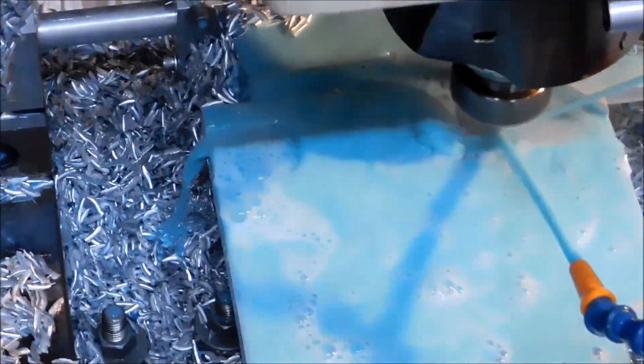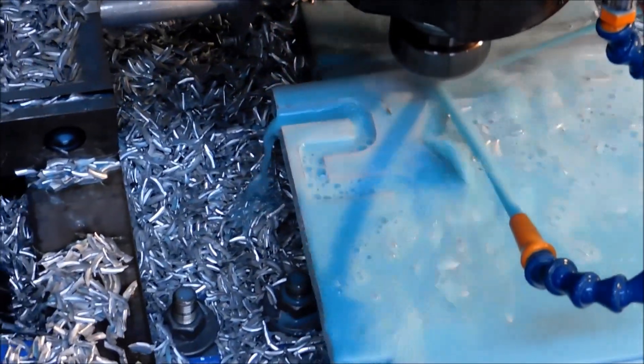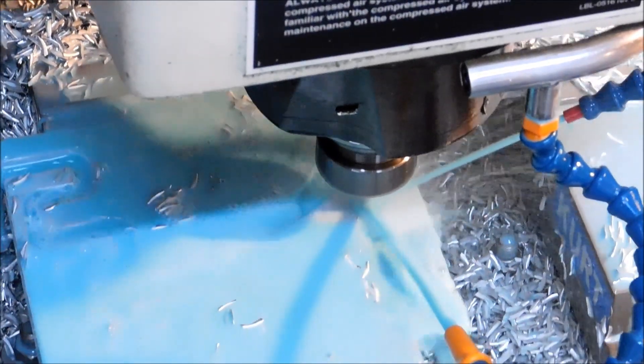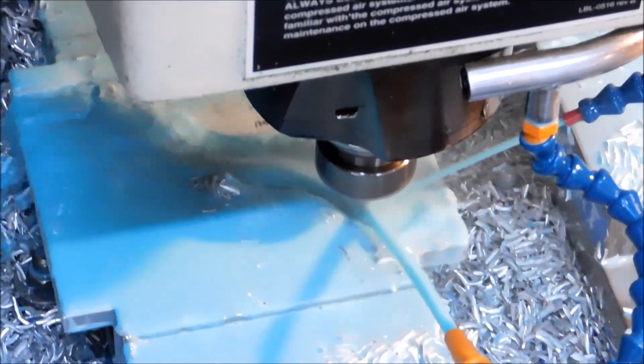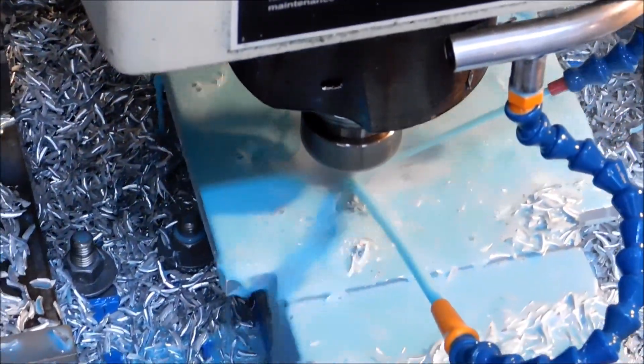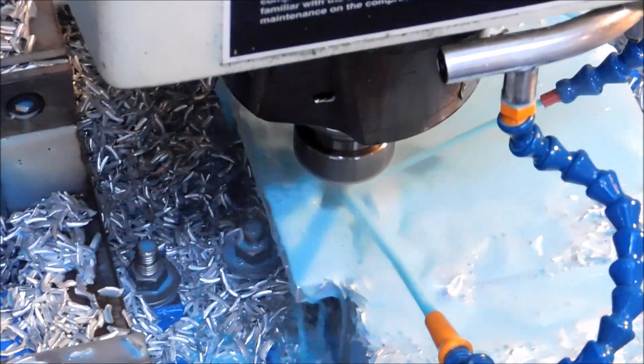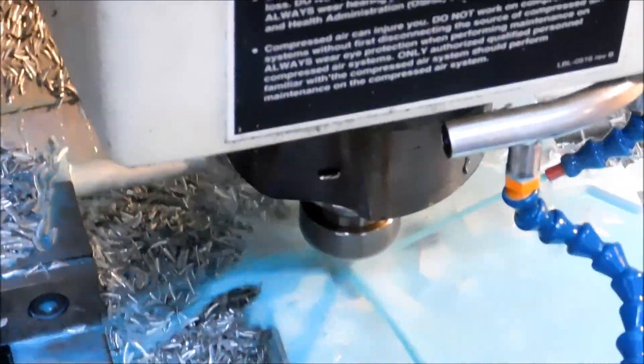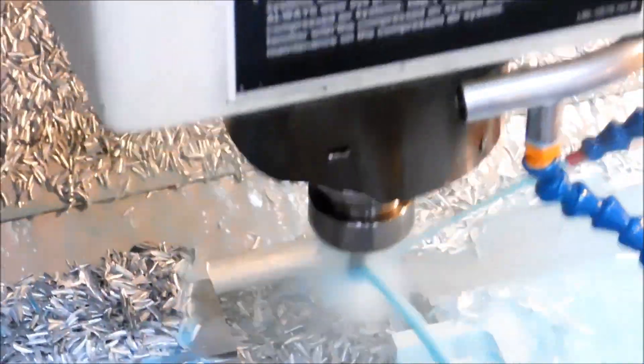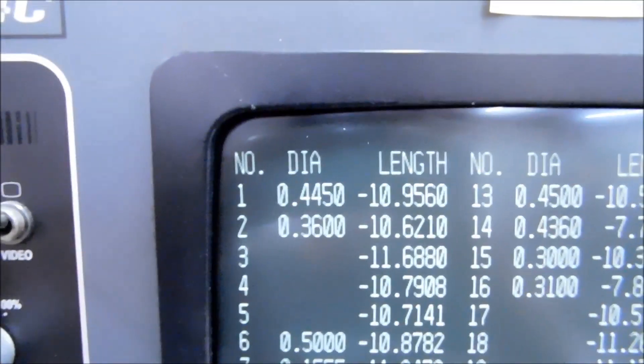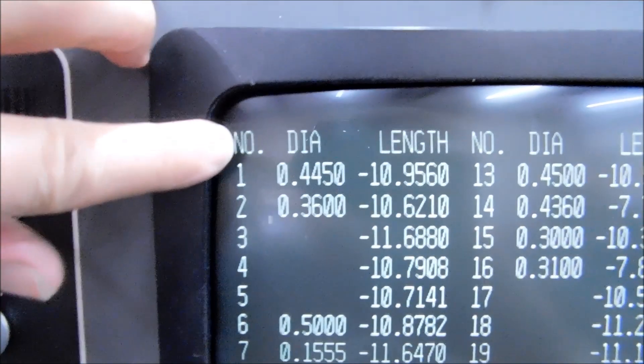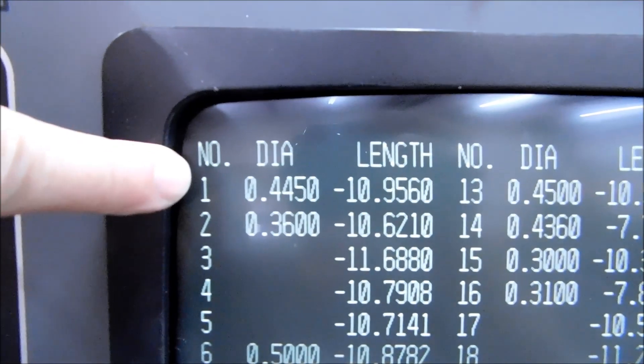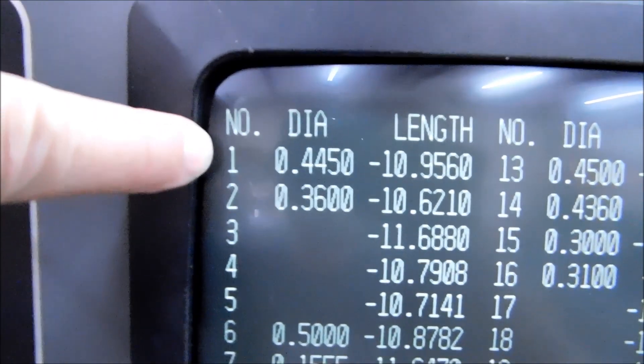Okay, for all you CNC guys out there, in the tool table you're going to have to enter the diameter of the tool that you're using. I'm using a .437 diameter cutter, but I'm telling the machine it's .445, so it's staying a couple thousandths away from the finished geometry.